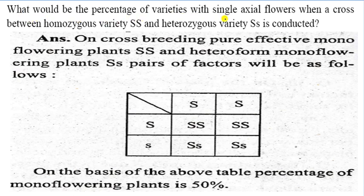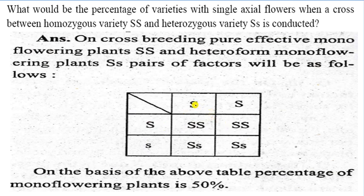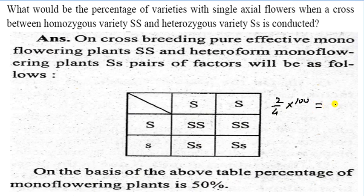What would be the percentage of varieties in single axial flower when a cross between homozygous dominant capital SS and heterozygous capital S small s is conducted? On cross-breeding pure effective mono-flowering plants capital SS and heteroform mono-flowering plants capital S small s, the pairs of factors produced are capital SS, capital SS, capital S small s, and capital S small s. The percentage of mono-flowering plants obtained is 50%.